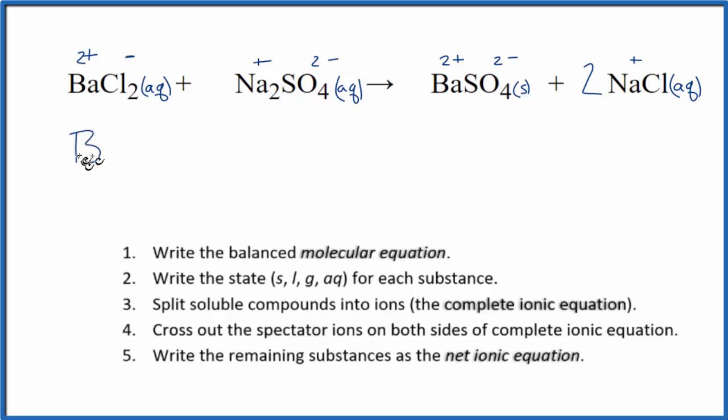So I have Ba2+, and I'm not going to write aqueous right now after each one, we'll do that at the end. Plus that chloride ion, Cl minus, we have two of them. So we put a coefficient of two in front.